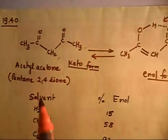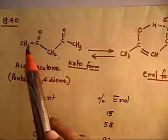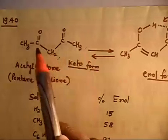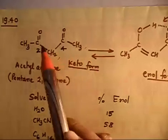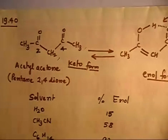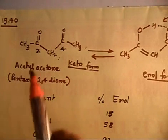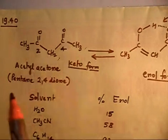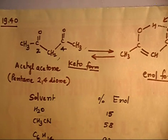The IUPAC name: numbering positions 1 through 5, you have keto groups at position 2 and position 4, so it can be called a 2,4-diketone. The parent chain is pentane, so the IUPAC name is pentane-2,4-dione. This is the keto form of the molecule.